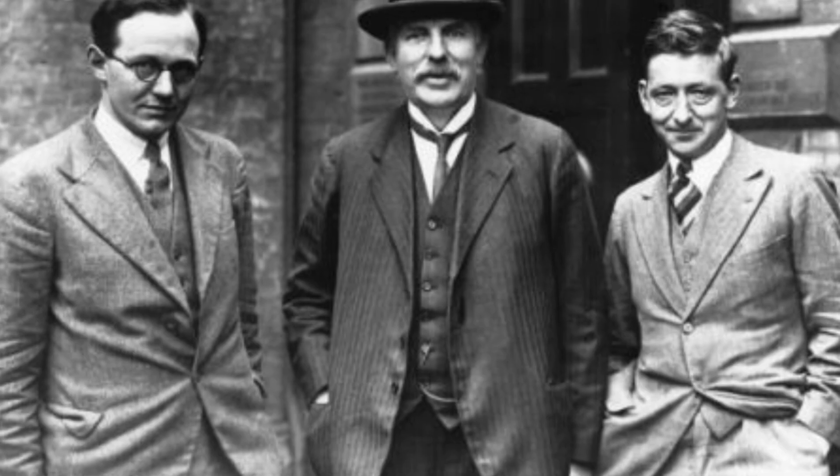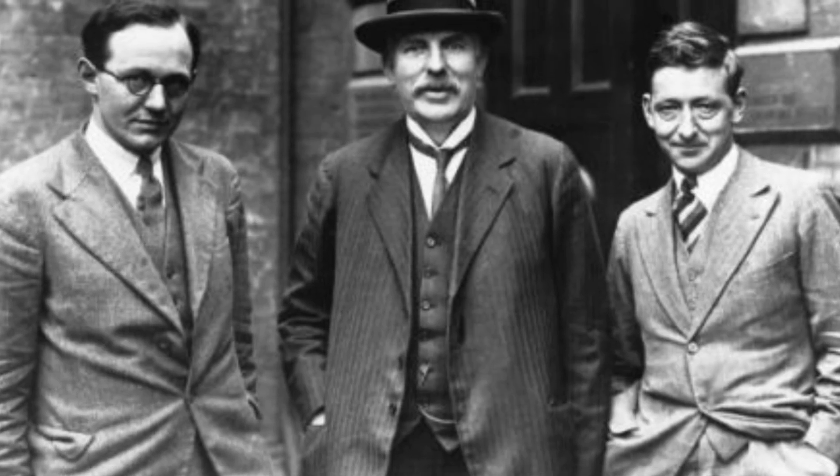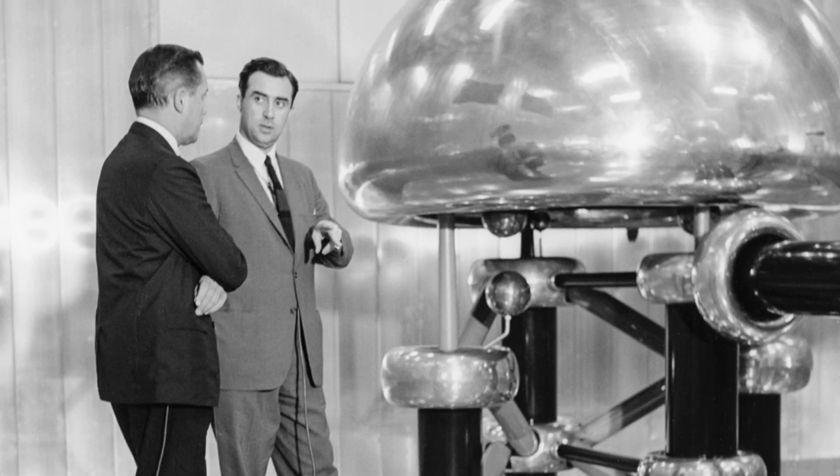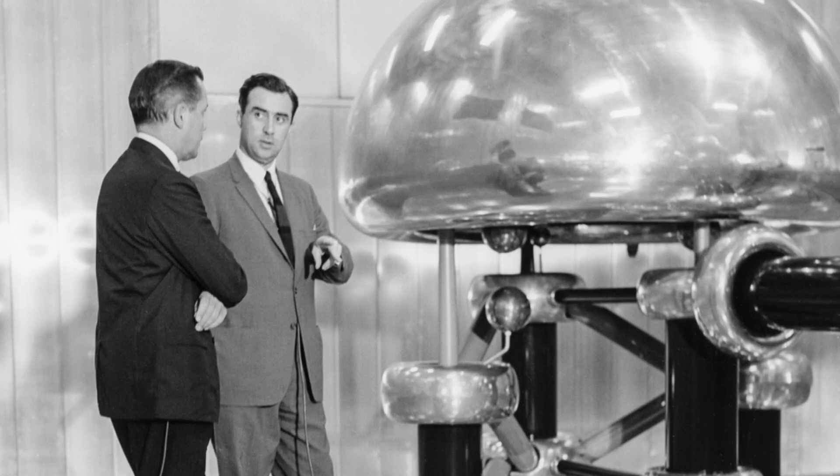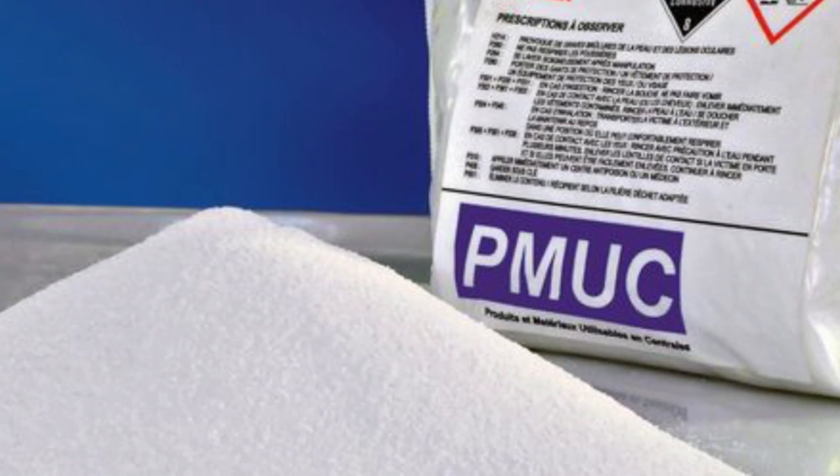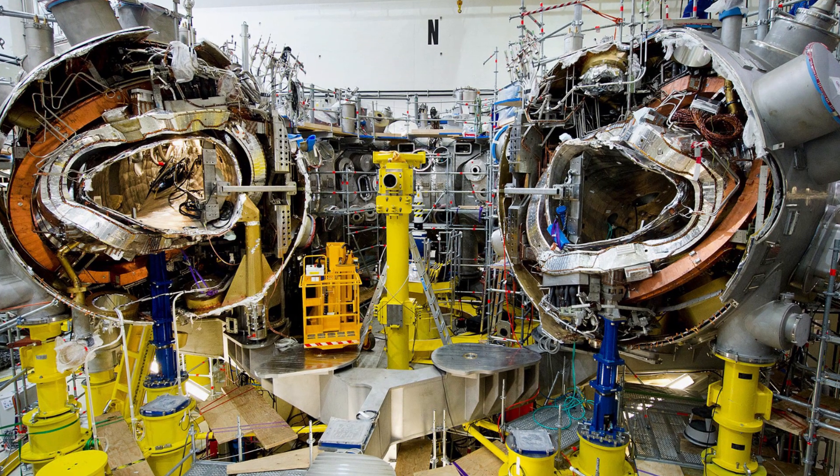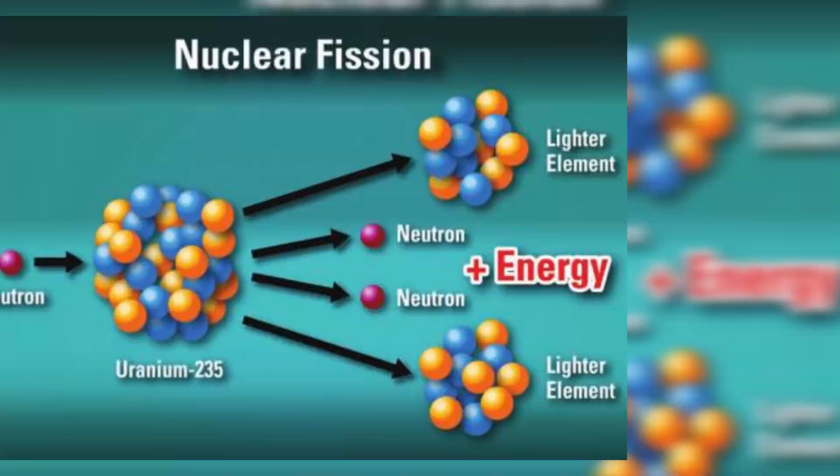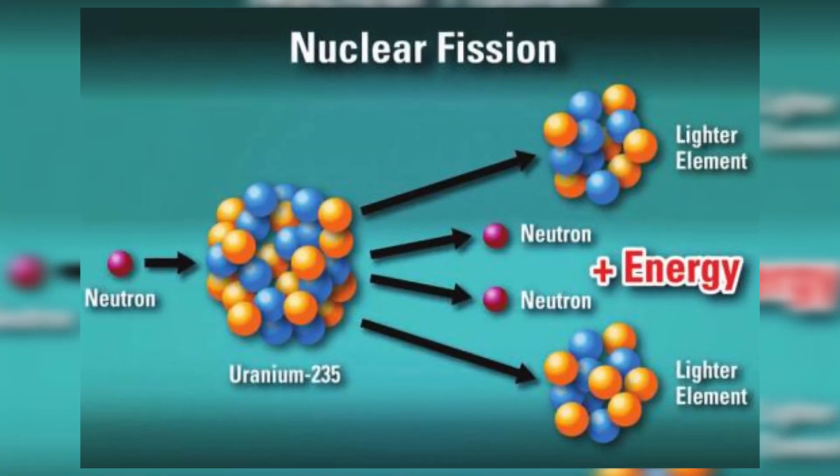In 1932, this idea became a reality when Walton and Cockroft managed to split a nucleus into two alpha particles by artificially accelerating protons against lithium-7. This eventually led to modern nuclear fission, where the nucleus of an atom splits into smaller parts to release huge amounts of energy.